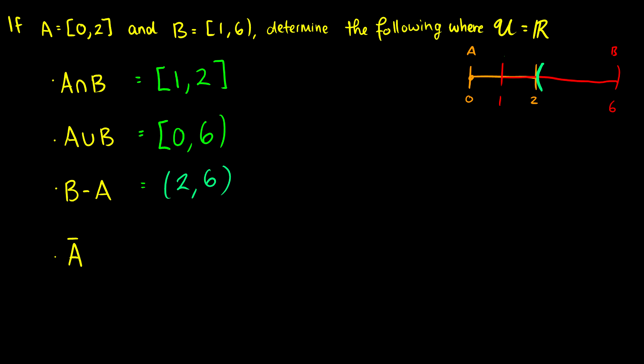And finally, our last one here, A complement. Well, A complement is everything in the universe minus A. So A is only from 0 to 2 inclusive, which means that the complement of A is going to come from negative infinity all the way up to 0, but not including it because 0 is in A. So 0 can't be in A complement. But then it also includes everything just after 2 to positive infinity. So we have to use a union to describe this set, because essentially we have everything to the left of A and we have everything to the right of A.